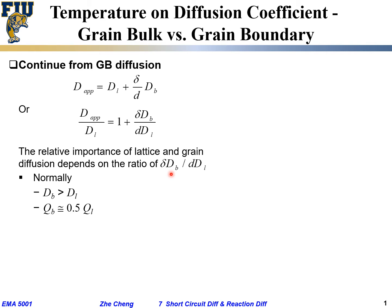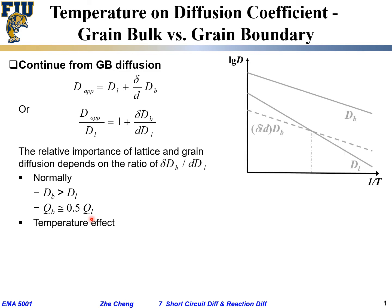Empirically, Q_B is roughly half of Q_L. This means the migration or activation energy barrier for grain boundary diffusion is typically only about half of that within the lattice. Now let's consider the temperature effect — how would temperature impact diffusion for this polycrystalline material, and at what temperature does grain boundary or lattice diffusion play the dominant role?